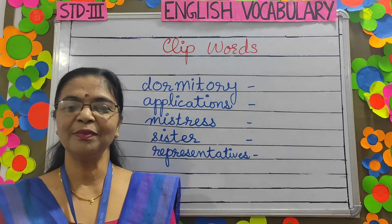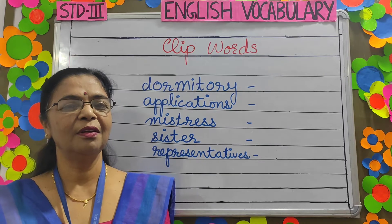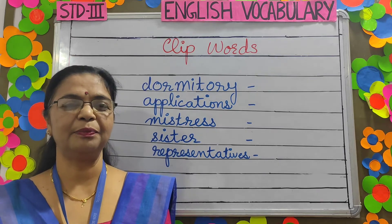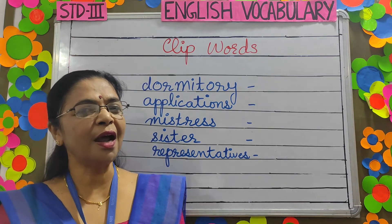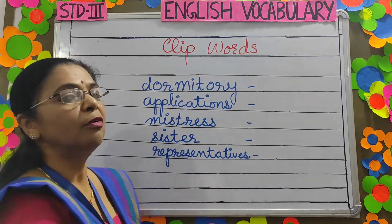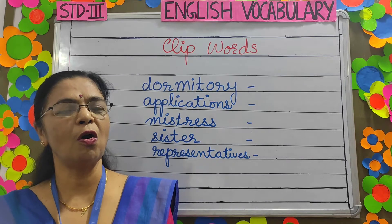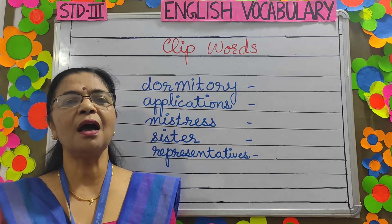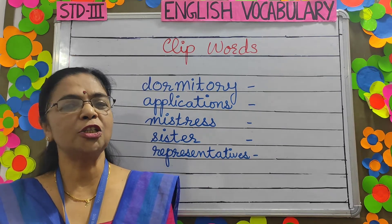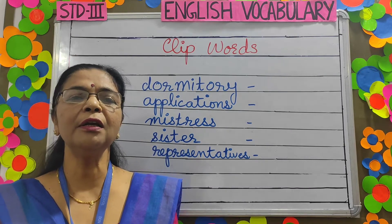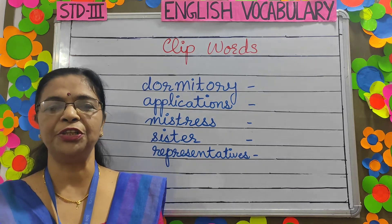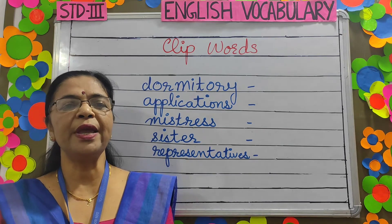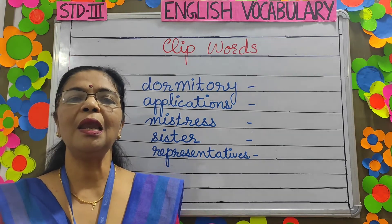Good morning parents and my dear students. Welcome back to Standard 3 English vocabulary class. Today we will start with clip words, or the shortening of words. Clip words are words which are shortened and the meaning of the original word does not change. It's the abbreviation of a word which makes it easier to spell and write.